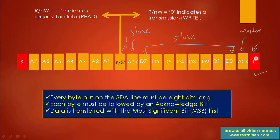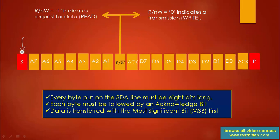The stop condition always releases the bus. Once the stop condition is generated, master has no control over the bus, and some other master can initiate the data transfer — that's the meaning of stop. After generating the start condition, master holds the line, and after generating the stop condition, master releases the line.